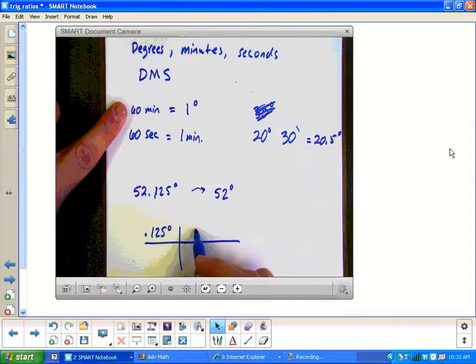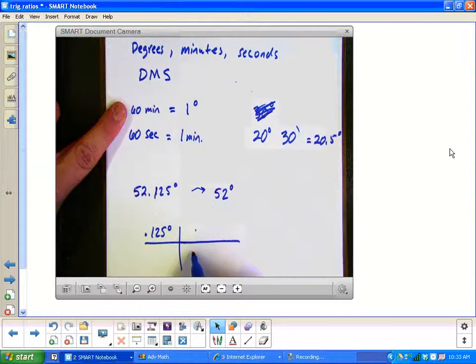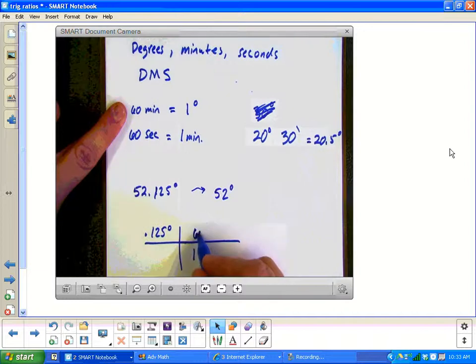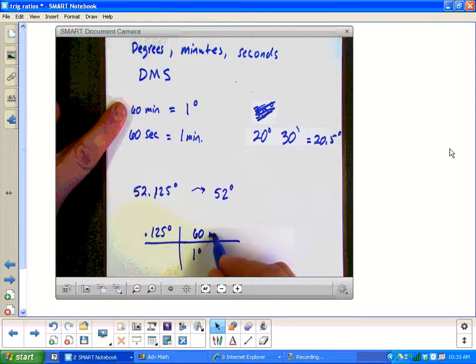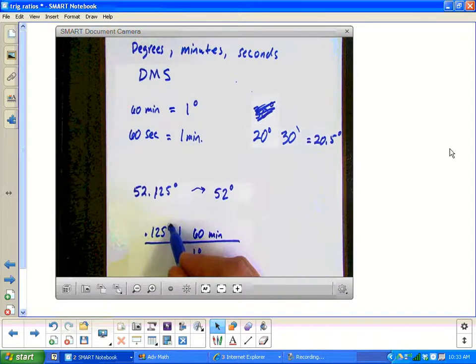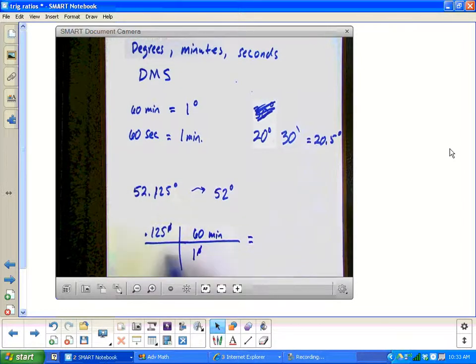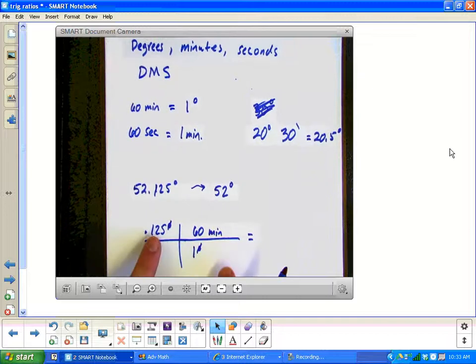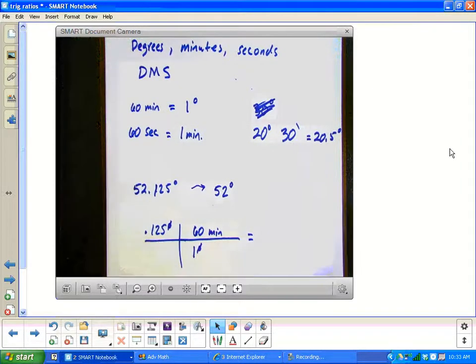So I could put one degree is 60 minutes. Now, what would happen to the degrees? Cancel out. Now, y'all are really good at dimensional analysis because I've got some good chemistry teachers that teach you really well. That's why I show you this one. So really, you're going to say 0.125 times 60, which is something.